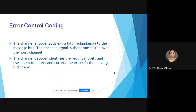The channel encoder adds extra bits — that is, redundancy — to the message bits. The encoded signal is then transmitted over the noisy channel. The channel decoder identifies the redundant bits and uses them to detect and correct the errors in the message bits. The channel encoder is used at the transmitter side and the channel decoder is used at the receiver side.